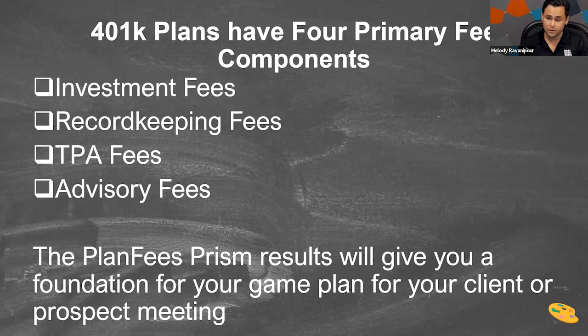We break down the four main components of a retirement plan's total fees through the Plan Fees Prism report. The four primary fee components are: investment fees, record keeping fees, TPA fees, and advisory fees. Using the Plan Fees Prism report and its results will give you a foundation for your game plan for your client or prospect meeting.